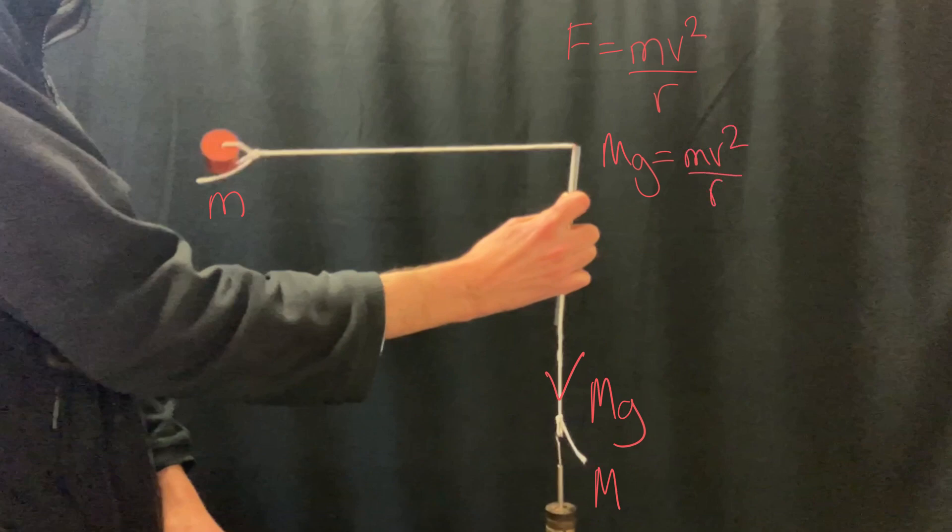Really important not to confuse little m, the mass of the bung, and big M, the mass that's hanging on the end. An easy mistake to make.